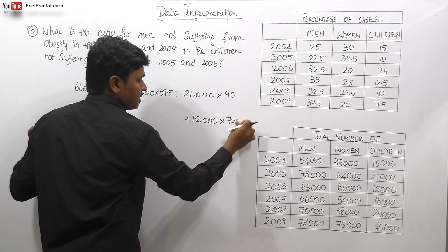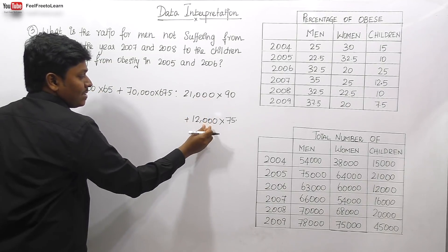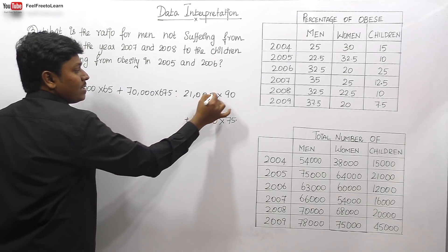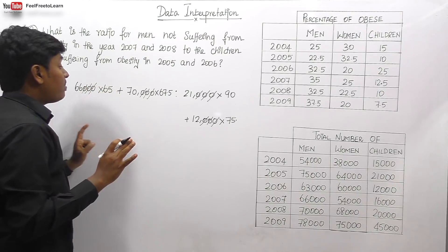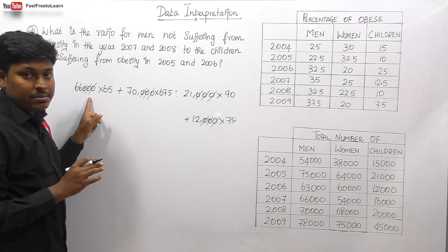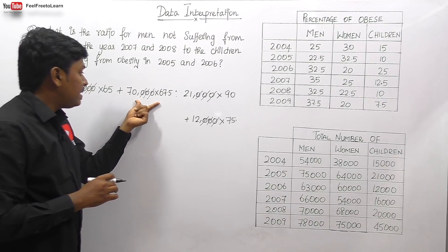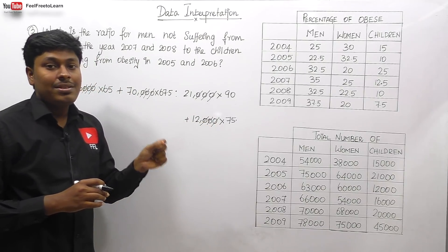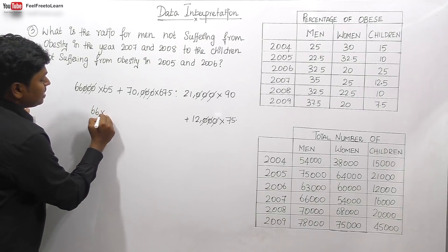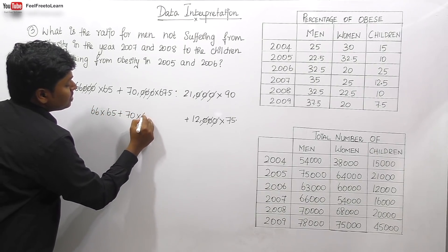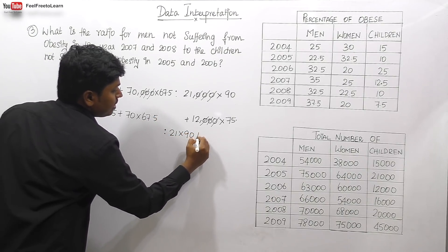After eliminating the percentage signs and three zeros from all terms, we get the numerator as 66 into 65 plus 70 into 67.5, and the denominator as 21 into 90 plus 12 into 75.